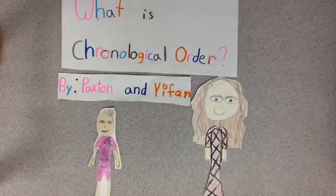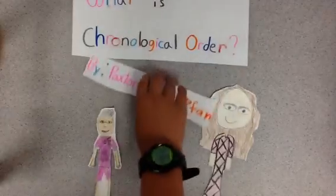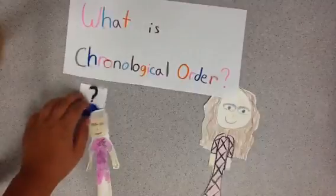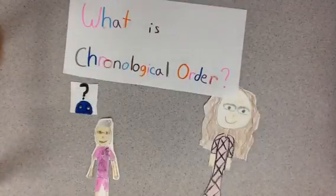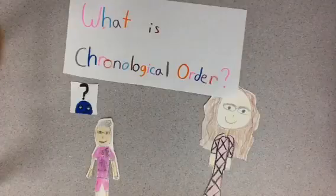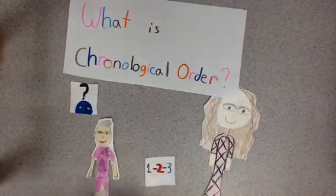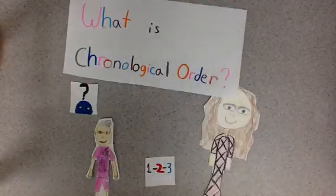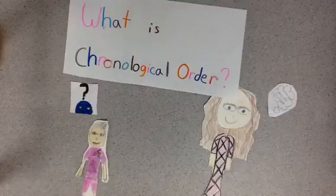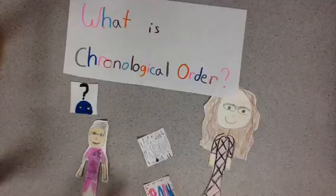What is Chronological Order? By Paxton and Yafan. Chronological order is usually how to make or do something in order. For example, we will show you how to decorate your room. We will show you how to turn this room into this room.